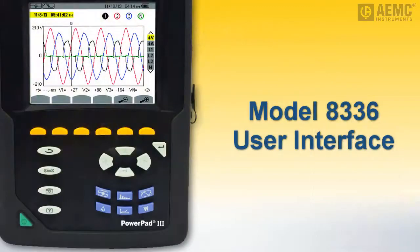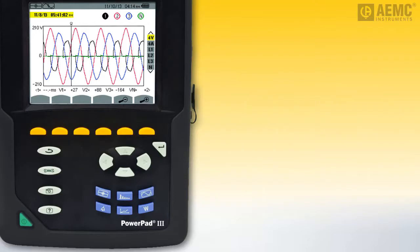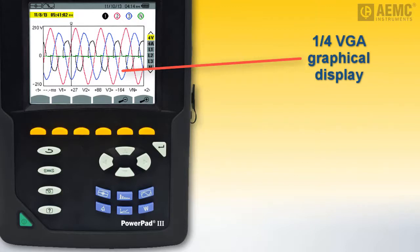With the Model 8336 powered on, let's take a moment to become familiar with the instrument's front panel interface. This includes a large, bright, 320 by 240 pixel color quarter VGA display for displaying measurements and configuring parameters.